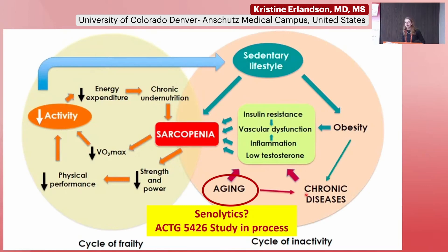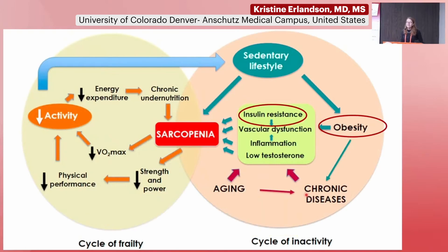I wanted to briefly mention a study that Mary-Claire Masters is leading in the AIDS Clinical Trials Group, looking at senolytic therapy to improve measures of muscle function and muscle strength — called A5226. They'll be looking at dasatinib and quercetin. This is a study that's up and running and will hopefully provide more information about how targeting the general aging process may impact sarcopenia.